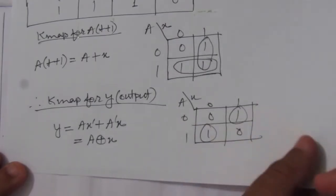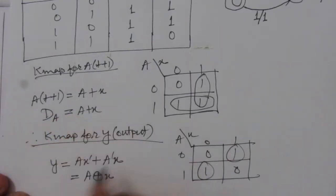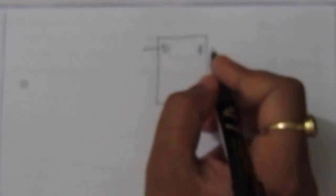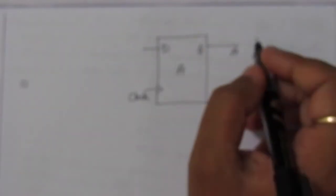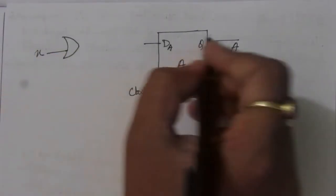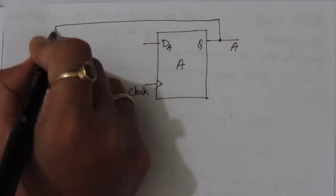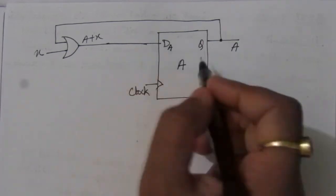Now we have to draw the circuit. We will use a D flip-flop, where D_A = A + X and output Y = A XOR X. So here we have one D flip-flop with input D, output Q, and a clock. The flip-flop is termed A and has output A. Since D_A = A + X, we use an OR gate with inputs X and the feedback from the present state output A.